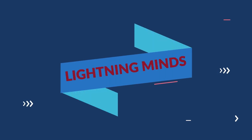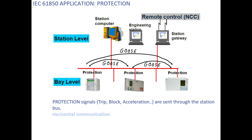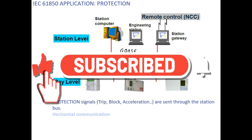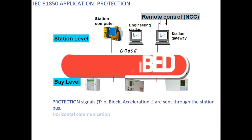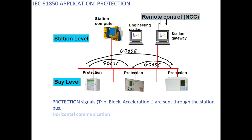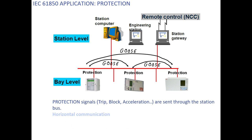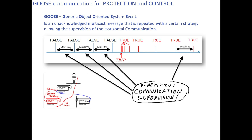Hello friends, welcome to this channel. We are continuing with our discussion on the fundamental concepts of IEC 61850. In the last session we discussed important substation automation concepts: the meaning of interlocking, how interlockings are implemented using 61850, different types of controls, and the difference between process control and substation control. In this session I am going to discuss about GOOSE and the publisher-subscriber concepts.